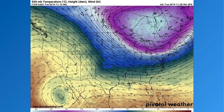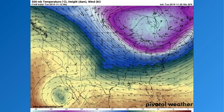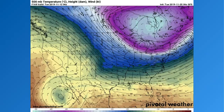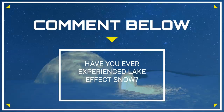Hey weather warriors, in this video we're talking about an explosion of lake effect snow that could occur towards mid-November. I'm also going to give you an update on the northeastern U.S. snowstorm in the second half of the video. If you like extreme weather videos, daily forecasts, and detailed long-range forecasts, hit that subscribe button below because we'll be releasing these on a daily basis. I also have my winter forecast coming out. Comment below — have you ever experienced lake effect snow?